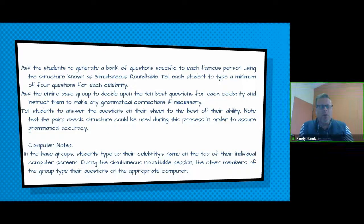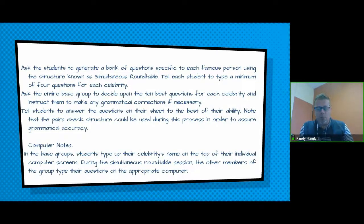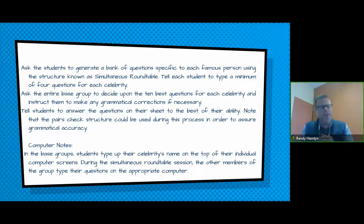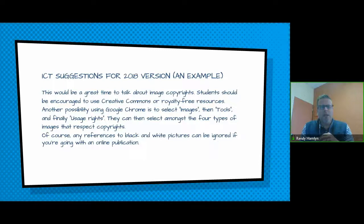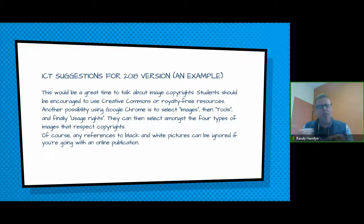At the very bottom, computer notes. The computer notes are made to go with the original version. As you can see in the computer notes, in the base groups, students type up their celebrity's name at the top of their individual computer screens. During the simultaneous round table, the other members of the group type their questions. Then you have the new version suggestions — for example, this would be a great time to talk about image copyright; students should be encouraged to use Creative Commons. In other ICT suggestions, I talk a lot about using Google Drawings, Google Docs, and so on.